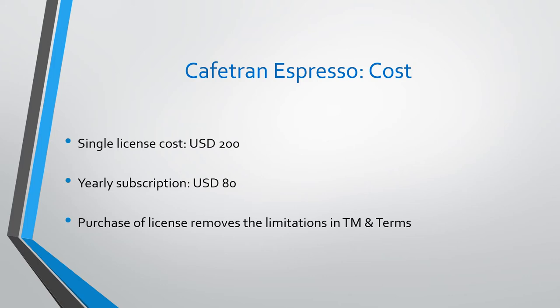Alternatively, if you want to buy a standard license, you can spend $200 USD and buy the Cafetran software. This is a one-time purchase, so once you buy it you can keep using it forever, or buy a new version optionally. In my opinion, a one-time payment is more economical for the translator.